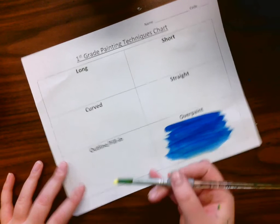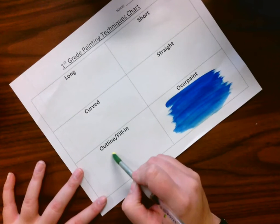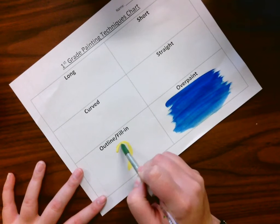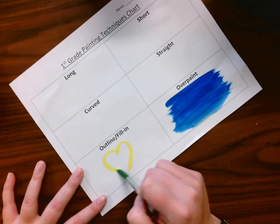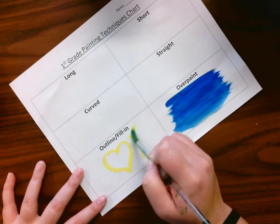So you're going to get a light color, a yellow, a white, something like that, and you're going to draw whatever you want in this section. Doesn't really matter to me, as long as it's school appropriate, it's fine.